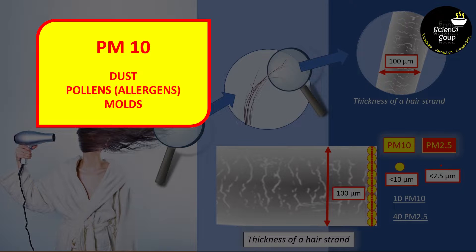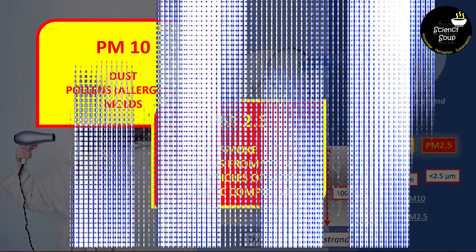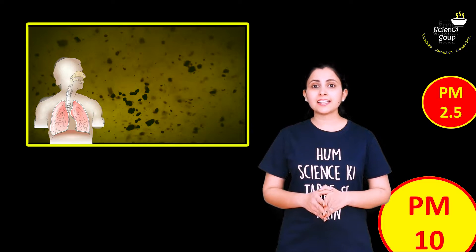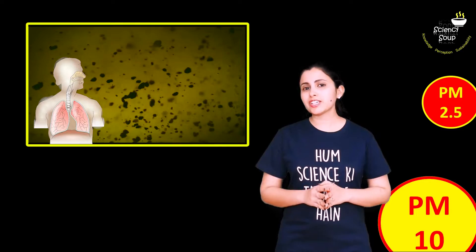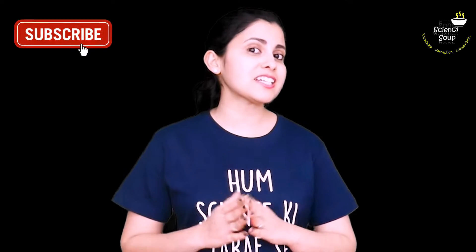PM10 includes dust, pollens and molds, while PM2.5 includes all types of smoke, emissions from vehicles, and fine particles of metals and organic compounds. These tiny particles float in the air, and when inhaled, they can penetrate deep into our lungs and cause serious health issues ranging from lung impairment to even lung cancer. Now let me take you to my storyboard to see what are the different types of masks available in India and how efficient each one is.